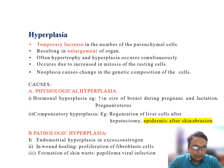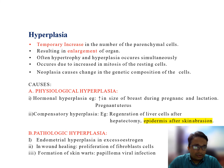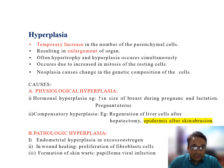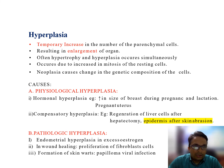The third type of cellular adaptation is hyperplasia — a temporary increase in the number of parenchymal cells resulting in enlargement of an organ. Hyperplasia is often observed to occur together with hypertrophy. It occurs due to increase in mitosis of resulting cells, and neoplasia-related changes in genetic composition of a cell can also result in hyperplasia.